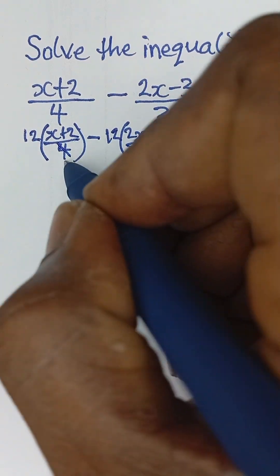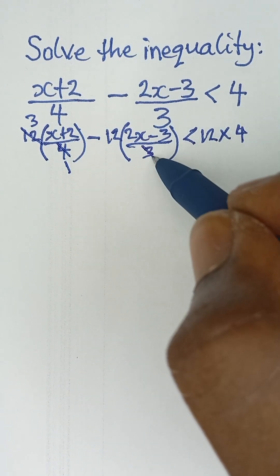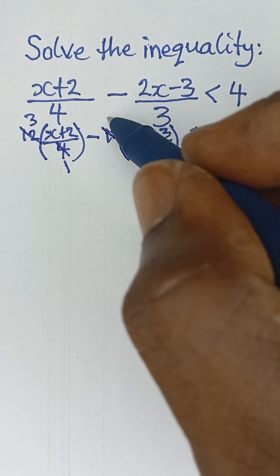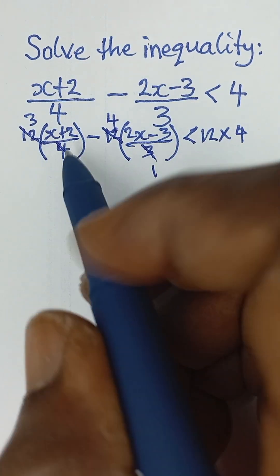So 4 here is 1 and 4 here is 3. 3 here is 1, 3 in 12 is 4.